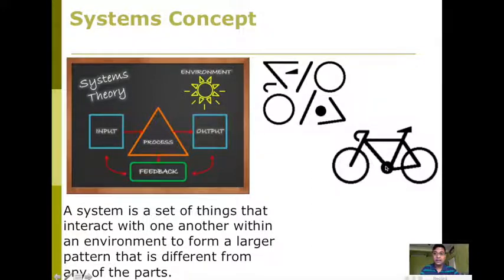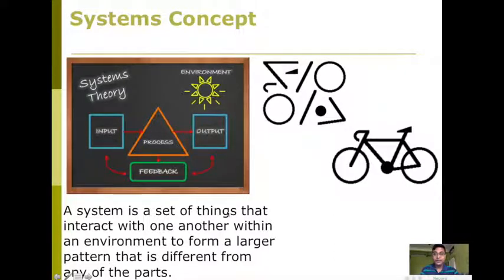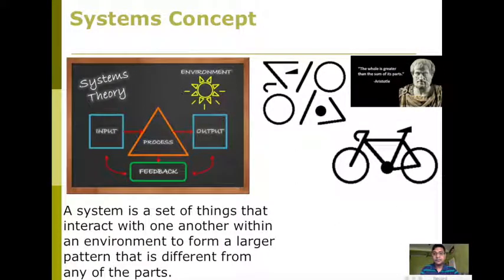Perhaps it becomes easy for everyone to understand that all these parts can make a bicycle. The bicycle has some properties which are not present in its individual parts — we can ride the bike, the bike can roll — but even though all the parts are there, individually they don't have those properties. So when all these components come together and form a system, the system gives rise to new properties not present in the individual parts. Those properties are known as emergent properties.